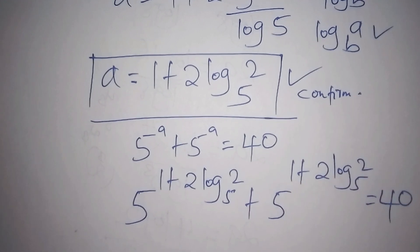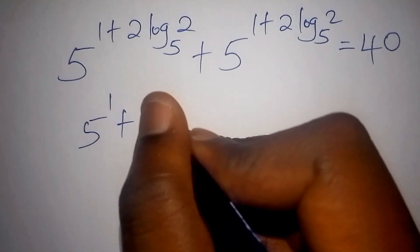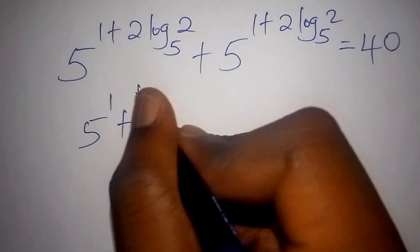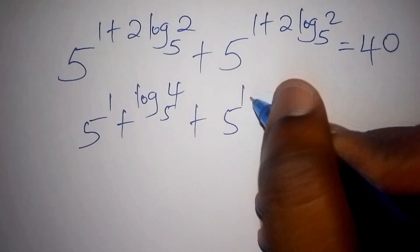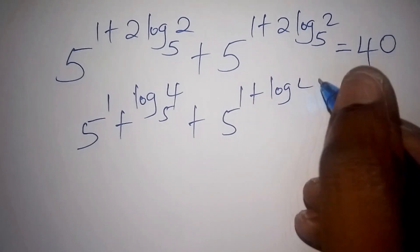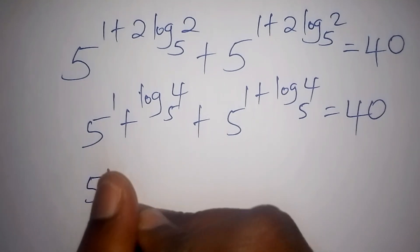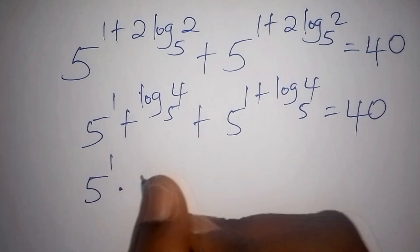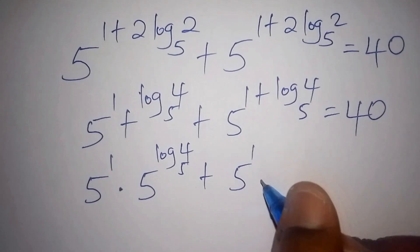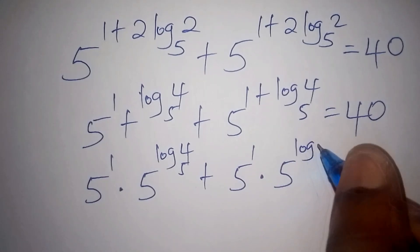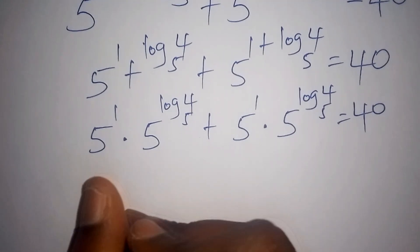We can rewrite the expression as 5 to the power of 1, times 5 to the log of 4 to the base of 5, plus 5 to the power of 1, times 5 to the log of 4 to the base of 5, equals 40. Here the exponent addition rule converts the sum into multiplication.